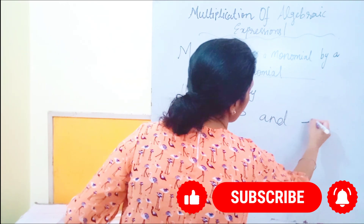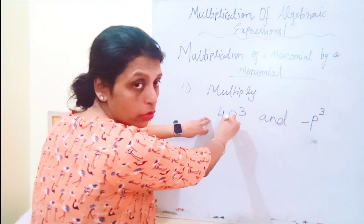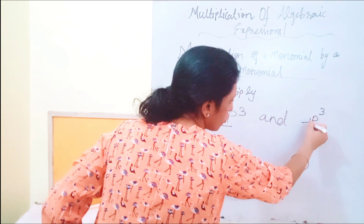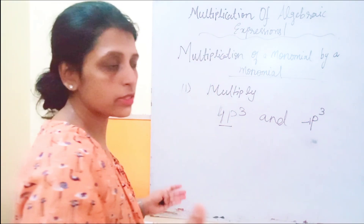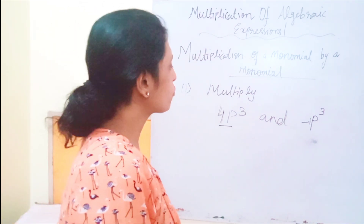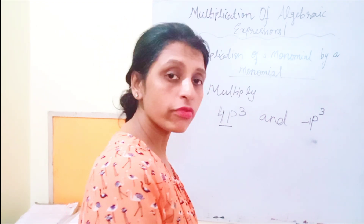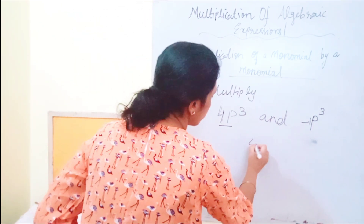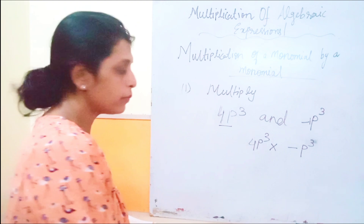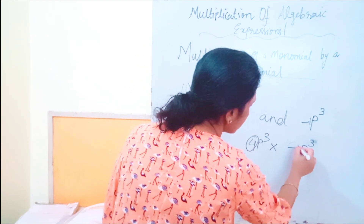Let's take 4p cube multiplied by minus p cube. One monomial is 4p cube and another is minus p cube. Here, if nothing is written before p cube, the numerical coefficient is 1. The numerical coefficient here is 4 and here it is minus 1.